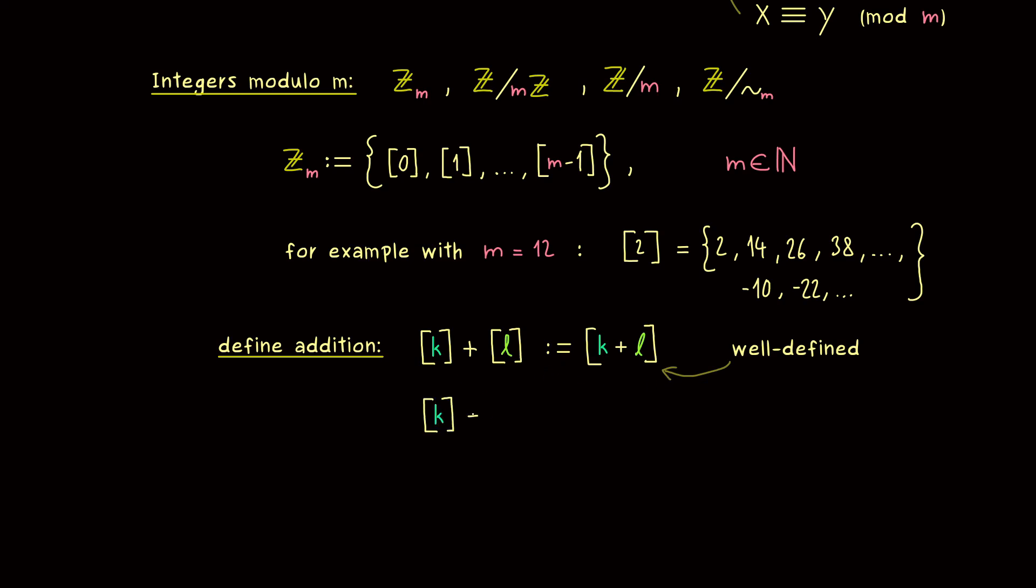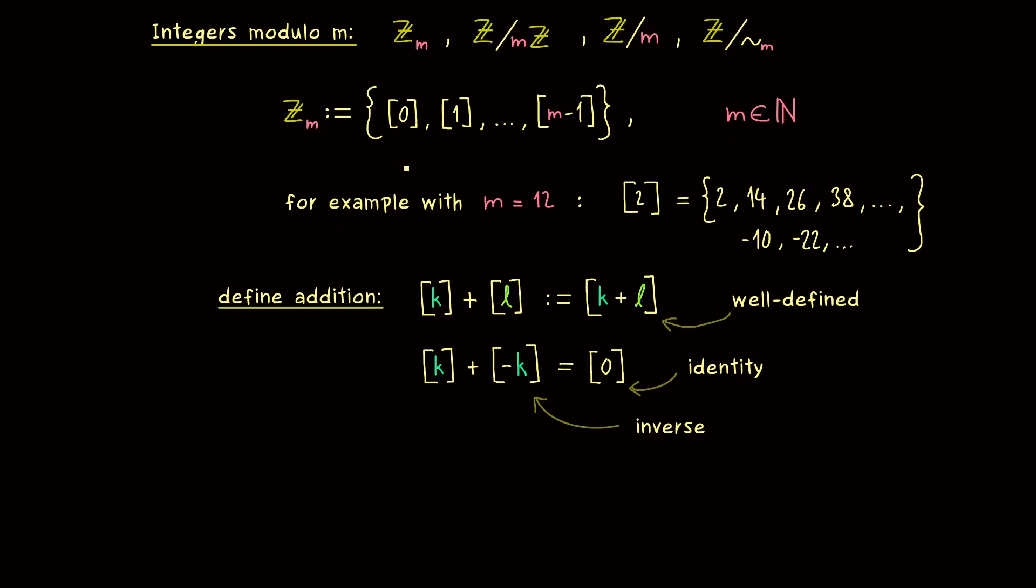And then it turns out that every equivalence class here has inverses with respect to this new binary operation. Namely, for a given k, just look at the equivalence class with minus k, because then by the definition of the addition, we land at the equivalence class of 0. In other words, the equivalence class of 0 is our neutral element. So in summary, you see we have a binary operation, an identity element, and all the inverses. So what we get is a finite group, and we also see it has exactly m elements.